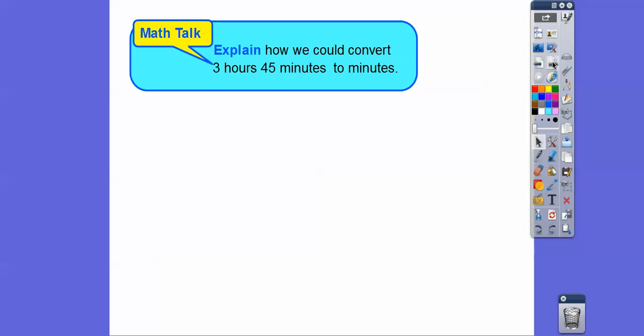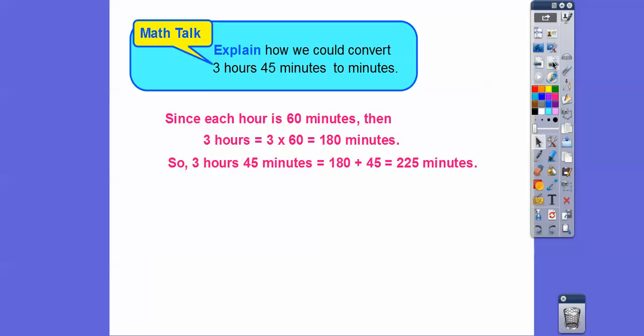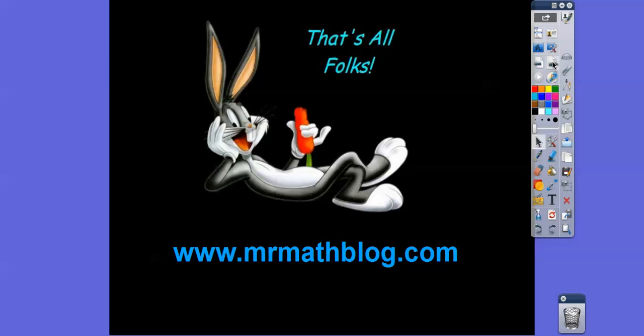Explain how we can convert 3 hours, 45 minutes, just to minutes. Well, since each hour is 60 minutes, then 3 hours is going to be 3 times 60, or 180 minutes. And so if we add 180 plus the 45, that's going to give us a total of 225 minutes. Okay, you guys, take care.